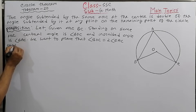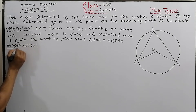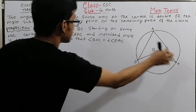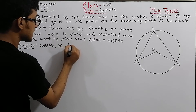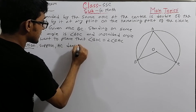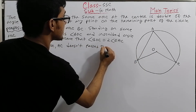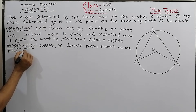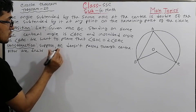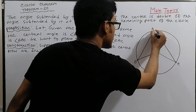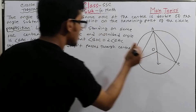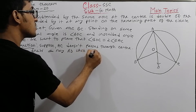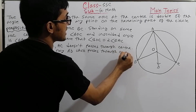For the construction, consider the case where arc AC does not pass through the center. We draw a ray AD from point A which passes through the center O. This construction will help us in the proof.